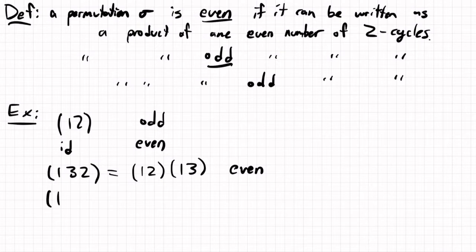And likewise, if I have something like (1 4 2 3), I can write it as two-cycles in a similar way. This would be an odd permutation and so on and so forth.